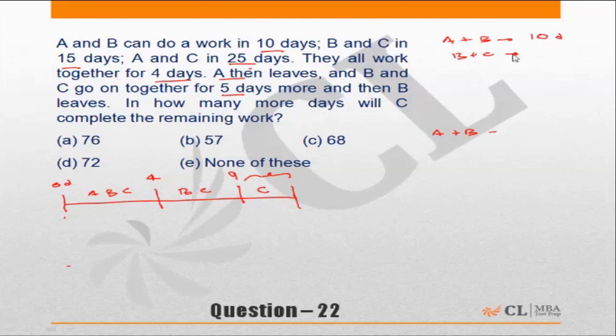B plus C can do the same piece of work in 15 days, and A plus C can finish the same piece of work in 25 days.